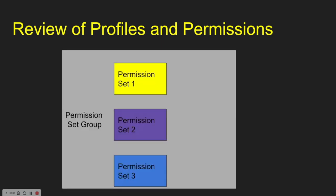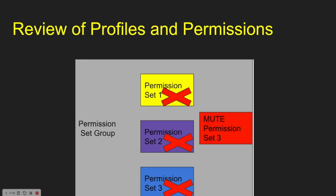So we have a permission set group here. We've added two to three permission sets in this particular group. If we add a mute permission, it allows us to negate particular attributes within that permission set. So let's say in permission sets one, two, and three we gave delete access to accounts, and then in the mute permission we said no, you can't have delete access — it removes it from those permission sets within the group. It's a combined overall view of the whole permission set group; it analyzes what the permission sets do and negates whatever access you gained with those permission sets.